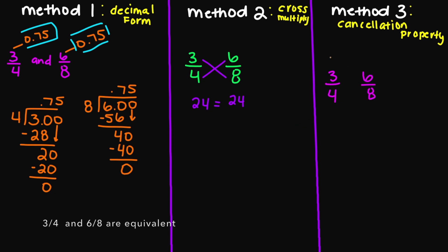So let's look at my three over four first. I cannot simplify my three over four any further, so I'm just going to leave this fraction alone just the way it is. However, I can simplify my six over eight and reduce it to its lowest terms. So my numerator, I'm going to get two times three because that's going to give me six. And my denominator, I'm going to get two times four.